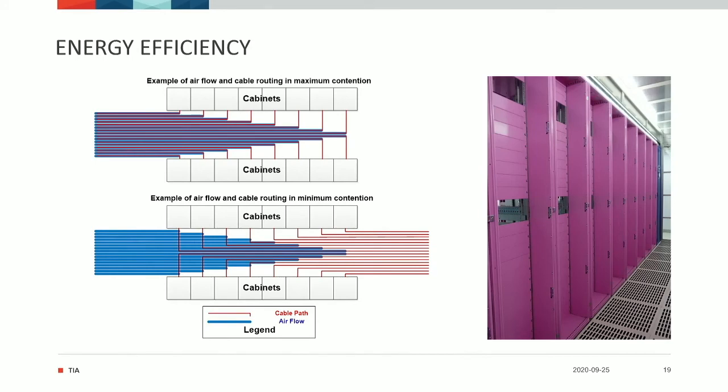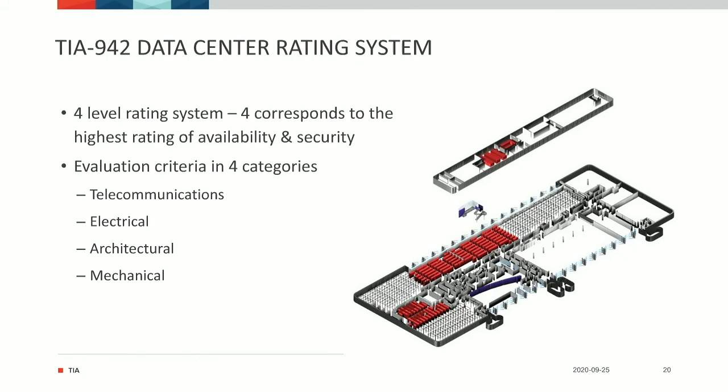We have a section on energy efficiency, which is now very important. We have a data center rating system — a four-level rating system — with rated 1 having the lowest level of availability and security, and rated 4 having the most availability and security. The criteria for evaluation in this rating system are divided into four areas: telecommunications, electrical, architectural, and mechanical.